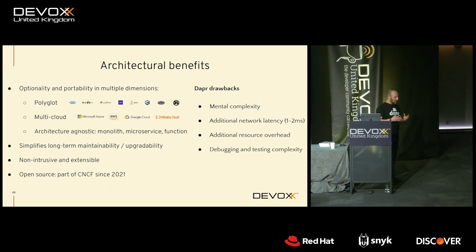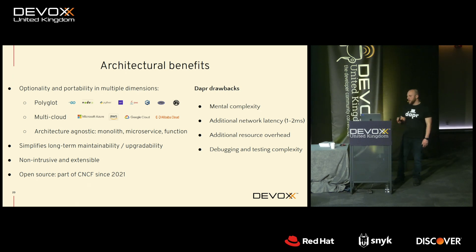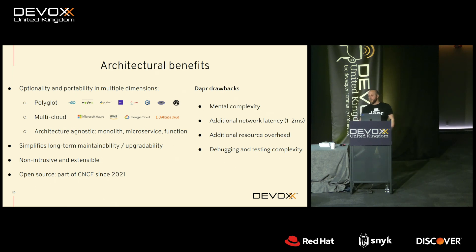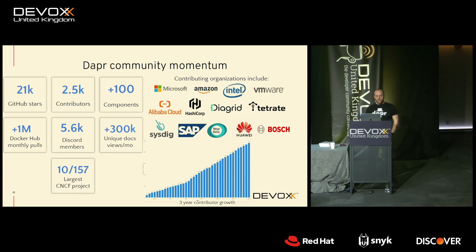There are drawbacks, of course. There's additional mental complexity because it's another process running next to your application. It adds network latency — tests in the upstream community show between one and two milliseconds. There's additional resource overhead — around 20 to 40 megabytes for the binary. And mocking and testing is slightly more involved. That said, looking at upstream momentum, DAPR is today probably the ninth fastest-growing active CNCF project, with over 21,000 stars and 2,000 contributors.